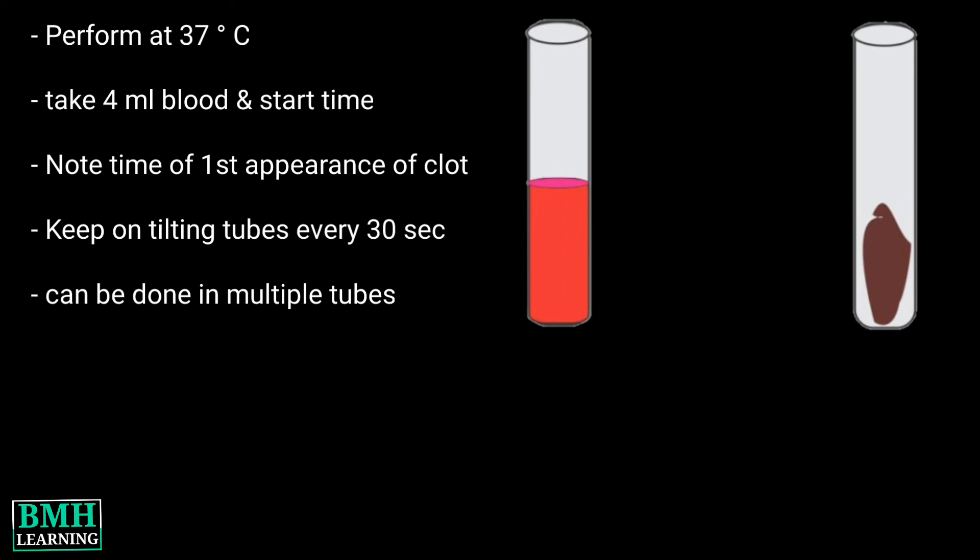The second is the test tube method. Perform this test at 37 degrees centigrade. Take 4 ml of blood and start the timer. Note the time when there is the first appearance of clot formation. Keep tilting the tubes every 30 seconds to observe clot formation. This test can be done in multiple tubes to be more accurate.